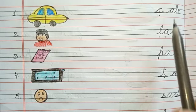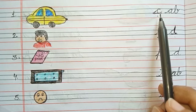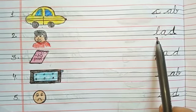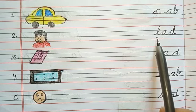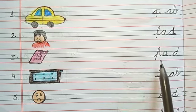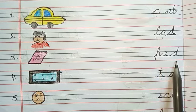Now, kids, let's revise. Phonic sound of C is ka, ka, ab, cab. Phonic sound of L is la, la, ad, lad. Phonic sound of P is pa, pa, ad, pad.